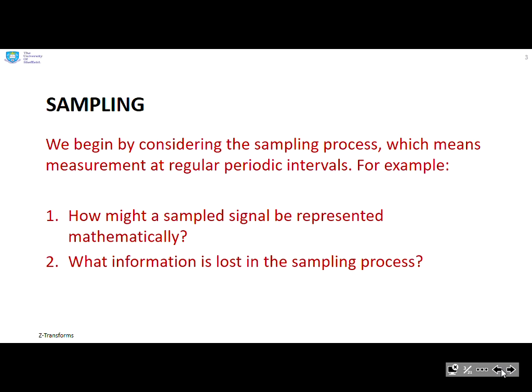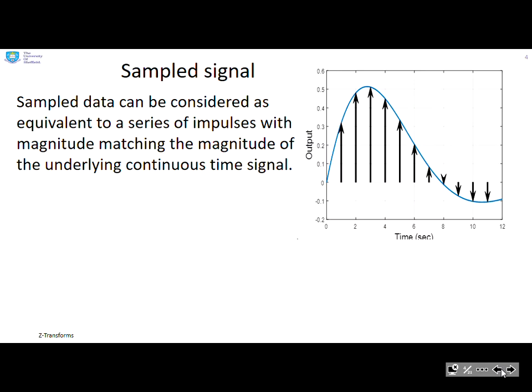We begin by considering the sampling process, which means measurement at regular periodic intervals. Questions you might ask are: how might a sampled signal be represented mathematically, and what information is lost in the sampling process? Sampling means we only take values at specific points, marked by arrows in the diagram. Sample data can therefore be considered as a series of impulses with magnitude matching the magnitude of the underlying continuous time signal — these vertical arrows are a bit like impulses.